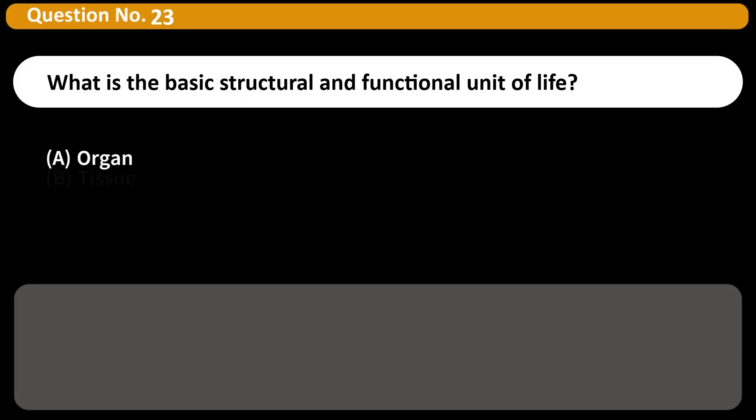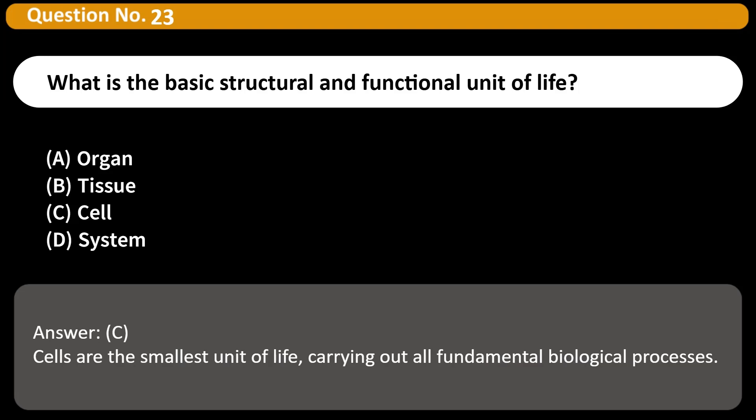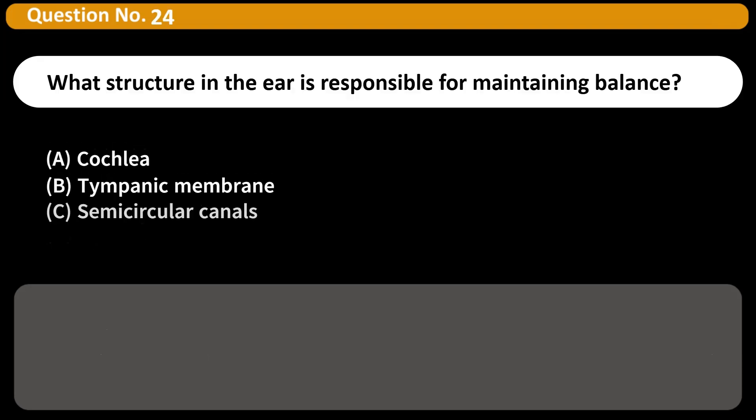What is the basic structural and functional unit of life? A) Organ, B) Tissue, C) Cell, D) System. Answer: C. Cells are the smallest unit of life, carrying out all fundamental biological processes.